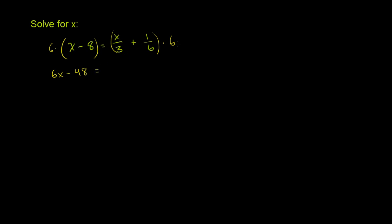And then we have x over 3 times 6. Let me just write it out here. So that's going to be 6 times x over 3 plus 6 times 1 over 6. Or we get 6x minus 48 is equal to 6 times something divided by 3. That's the same thing as 6 divided by 3 times that something. That's just going to be equal to 2x plus 6 times 1 over 6, or 6 divided by 6 is just going to be 1.